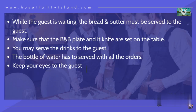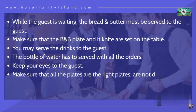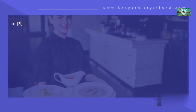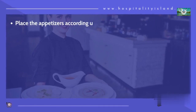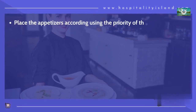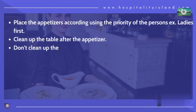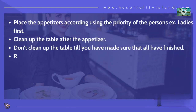Step 22: Keep your eyes on the guest. Step 23: Make sure that all the plates are the right plates, are not damaged or chipped, the condiments are correct, and the temperature is right. Step 24: Place the appetizers according to the priority of persons — for example, ladies first. Step 25: Clean up the table after the appetizer. Step 26: Don't clean up the table until you have made sure that all guests have finished. Step 27: Readjust the cutlery if needed.